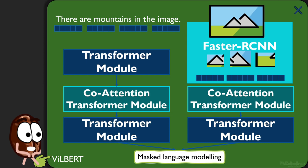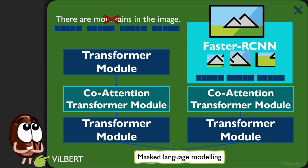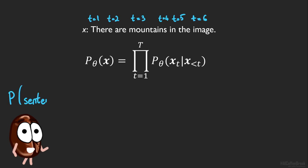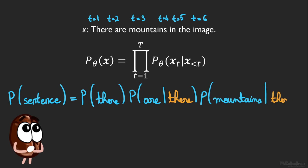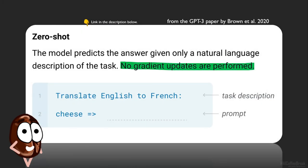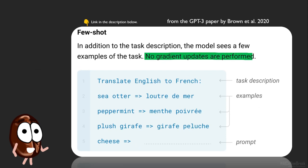Most vision and language models use the masked language modelling loss, where a BERT-based vision and language transformer processes text following the idea of a denoising autoencoder. The original sequence is altered by randomly masking some tokens and the model must predict what those tokens originally contained. But masked language modelling-based models are not really language models in the classical sense, because they can't compute the joint probability of tokens in a sentence by auto-regressively factorizing the probability — that is, applying the chain rule over and over.